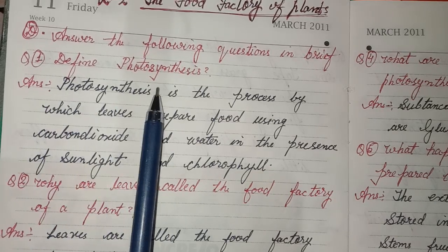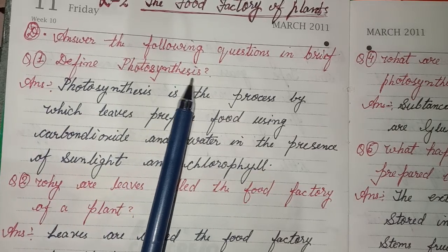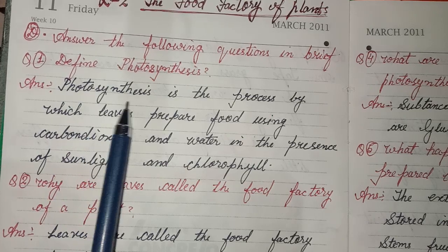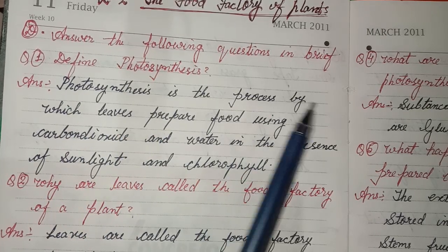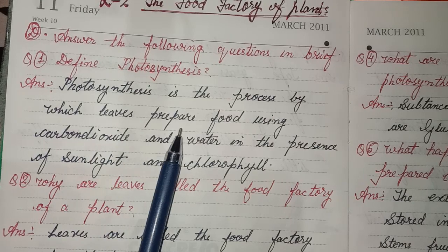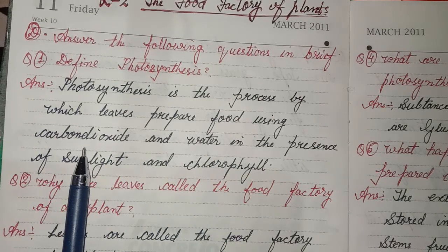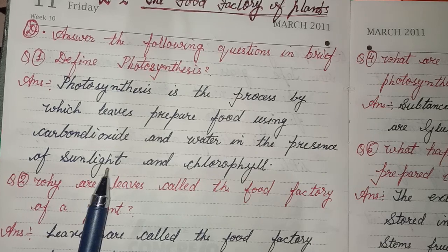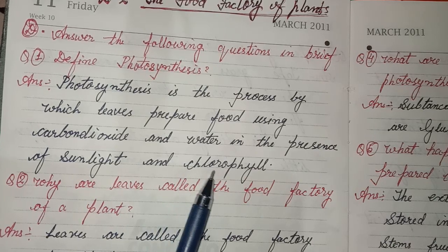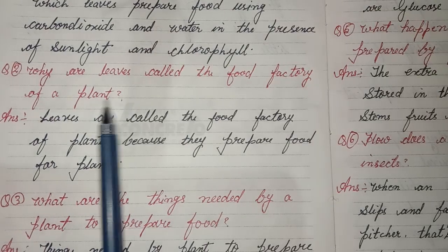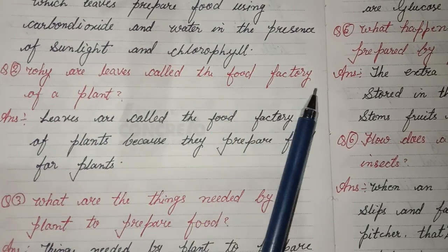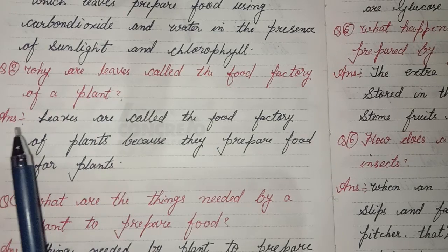First question: Define photosynthesis. Answer: Photosynthesis is the process by which leaves prepare food using carbon dioxide and water in the presence of sunlight and chlorophyll. Second question: Why are leaves called the food factory of a plant?